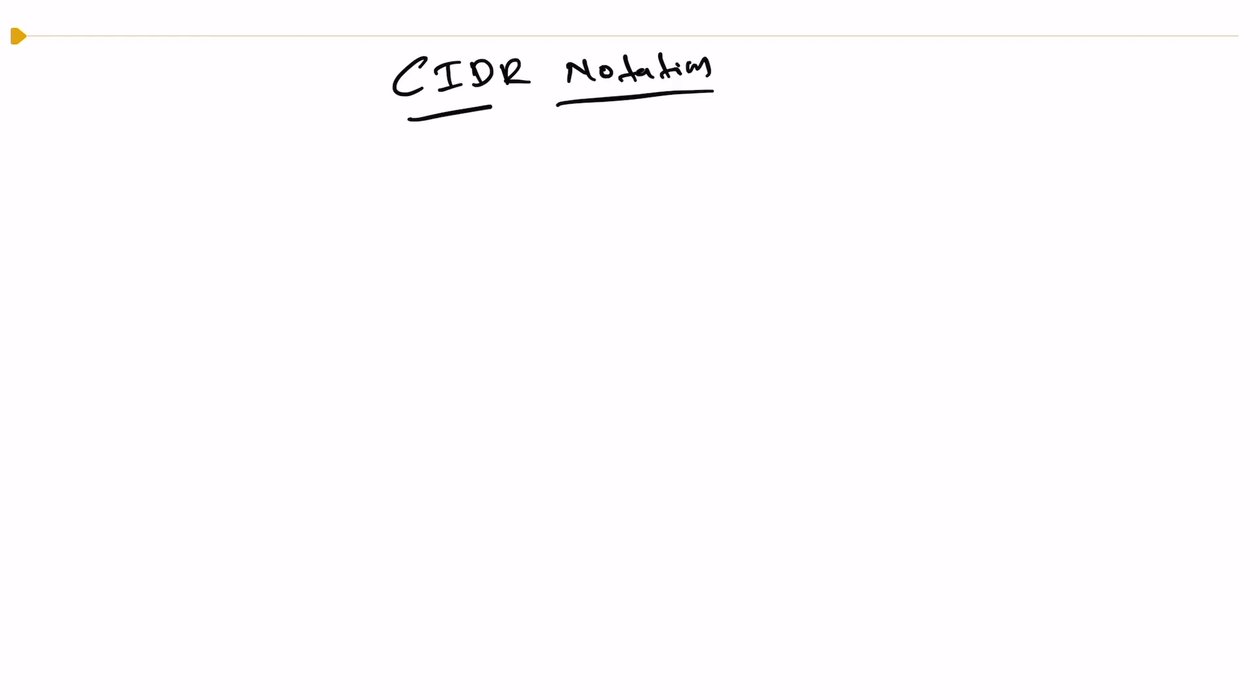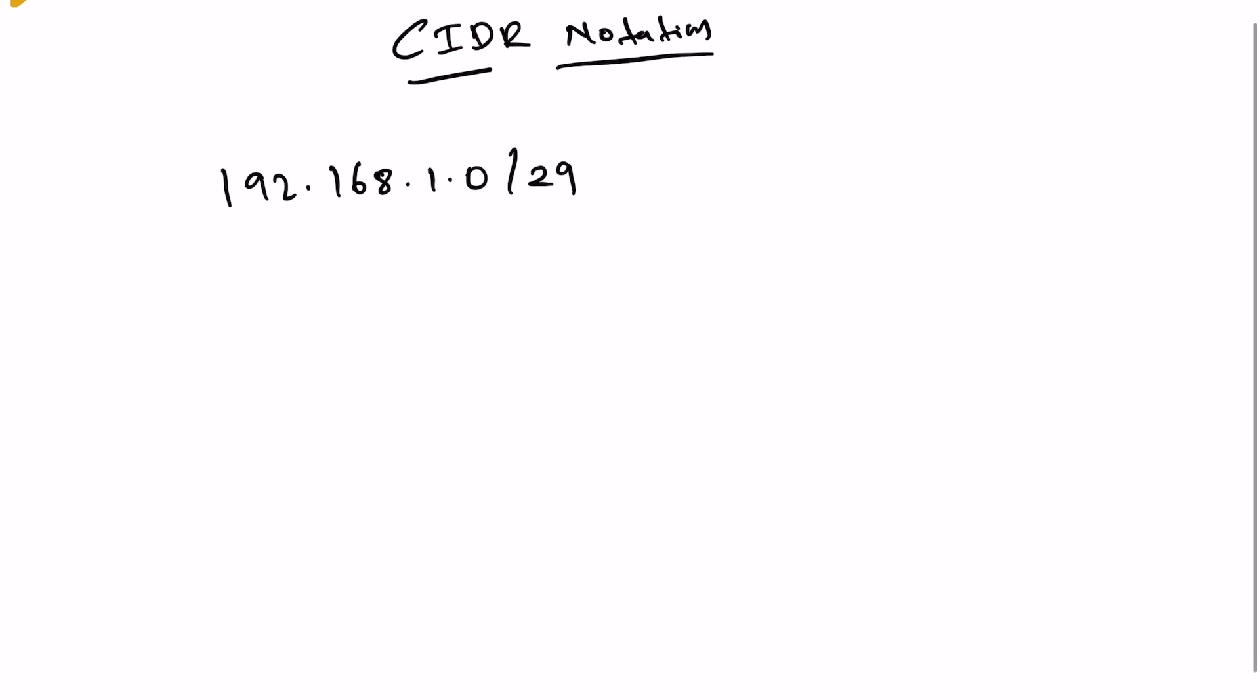How to understand CIDR notation easily: if you have an IP address 192.168.1.0/29 and somebody asks you how many IP addresses you're gonna get, the easy way to calculate is subtract 32 minus 29, which equals 3.